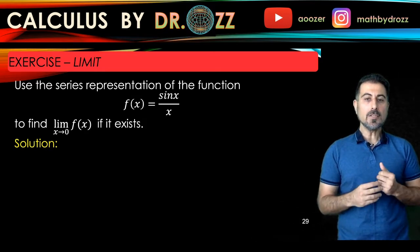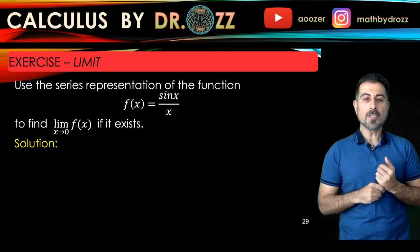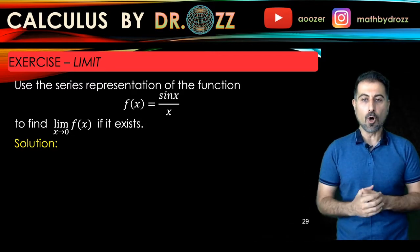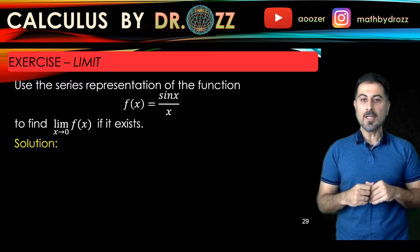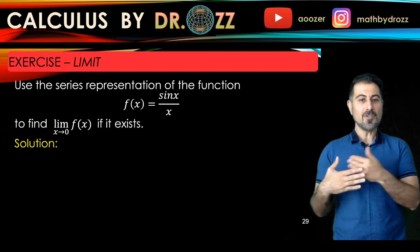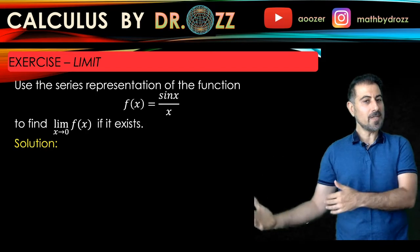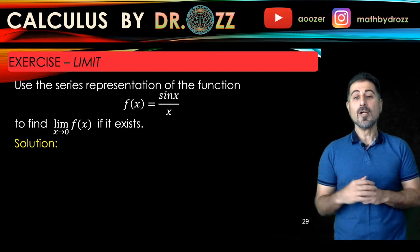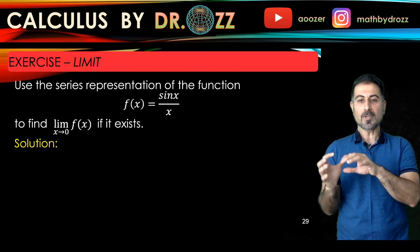You run into a 0/0 type indeterminate form when you plug in 0, as you have sin(0)/0. To go around that you can use the table of sample values like the way we did in calc 1, or you can use L'Hôpital's rule to calculate this limit.